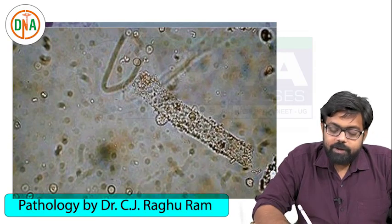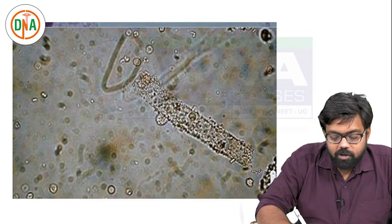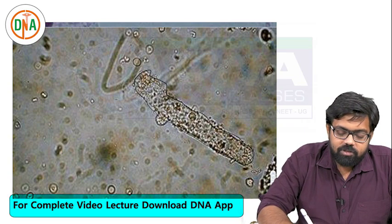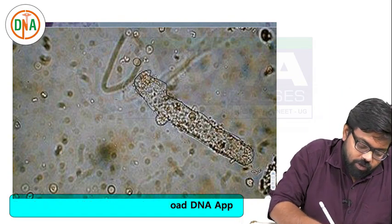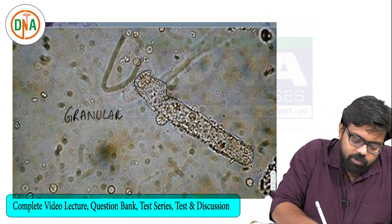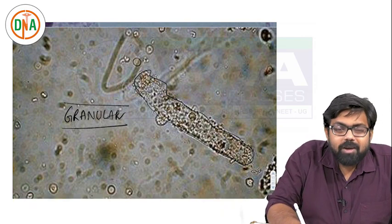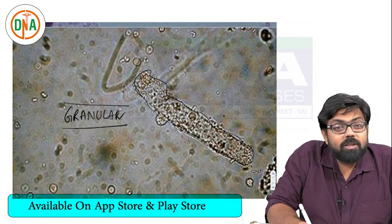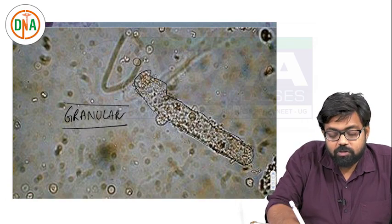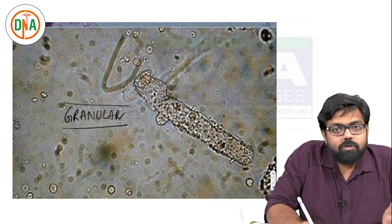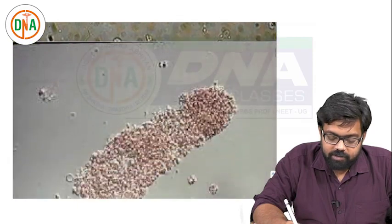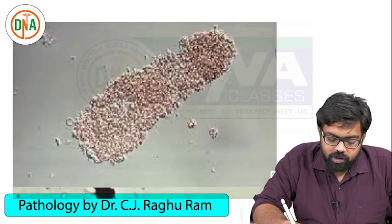The next is a granular cast. You can appreciate the outlines are much more granular. A granular cast in a small number of cases can be seen normally. You may be asked about the composition of the granules - they may be plasma proteins, WBC granules, or some other plasma protein. This is all about a granular cast.